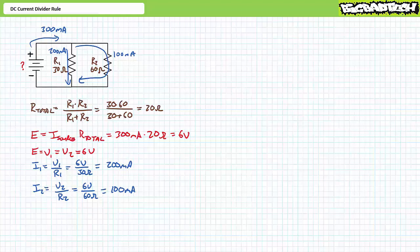Although we did get correct answers, you will note this analysis necessitated we first solve for total resistance, then solve for voltage, then solve for current through each individual resistor. If current is our property of interest, this method is a waste of time, and given the number of steps involved, too prone to human error. Perhaps a quicker and more direct means of obtaining current through elements exists. This method is the current divider rule.